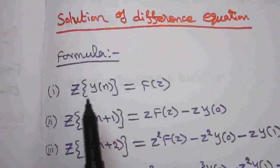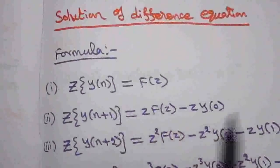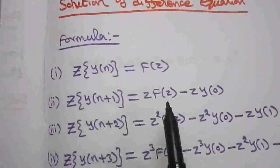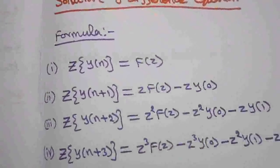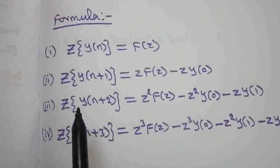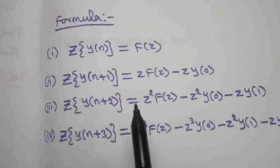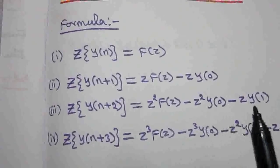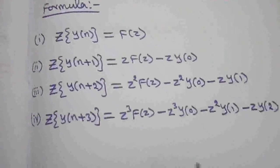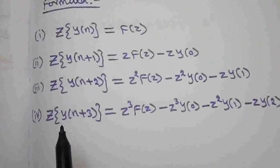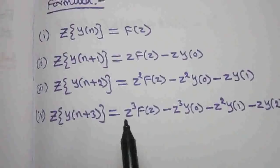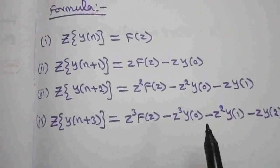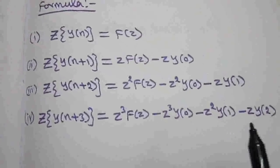Formulas: Z-transform of y(n) equals F(z). Z-transform of y(n+1) equals z·F(z) minus z·y(0). Z-transform of y(n+2) equals z²·F(z) minus z²·y(0) minus z·y(1).